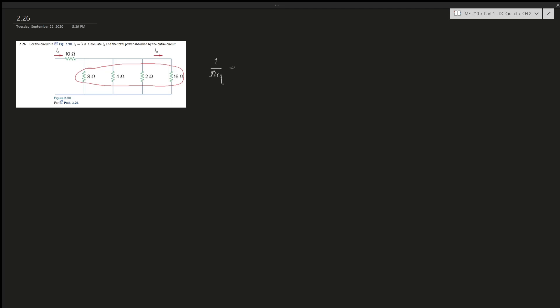This gives us 1 over 8 plus 1 over 4 plus 1 over 2 plus 1 over 16. In the end it should give you, let's see, 15 over 16. Oh sorry, the other way around: 16 over 15. That gives us the equivalent resistance, R equivalent.